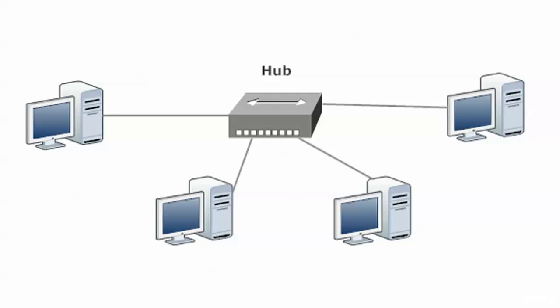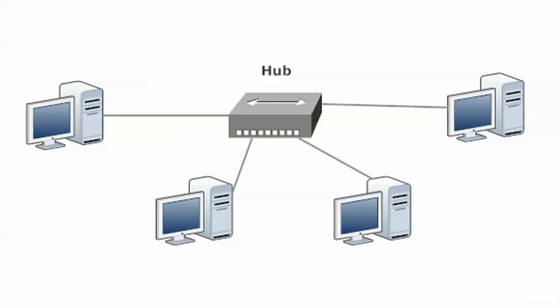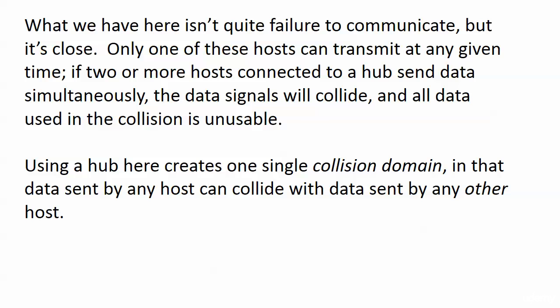Here's the hub symbol — if you see this on your exam, job interview, or practice exam, you've got to know that's a hub without being told. You're looking at an arrow with an arrowhead on each end. With a hub and four PCs, only one of these hosts can transmit at any given time. With four or eight hosts, we're still limited to one host transmitting, because if two or more hosts send data simultaneously, the data signals will collide and all data involved in the collision is unusable. Using a hub creates one single collision domain where data sent by any host can collide with data sent by any other host.